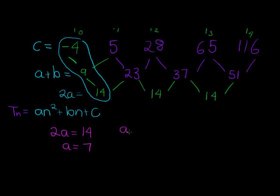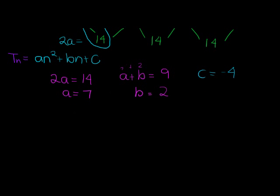Then we have a plus b is equal to 9. Well since a is equal to 7, it means b must be equal to 2 because 7 plus 2 is equal to 9. And then finally, c we already have because we used that cheat, t zero is equal to negative 4. So here's my general term, quick and easy, t n is equal to 7 n squared plus 2 n minus 4.